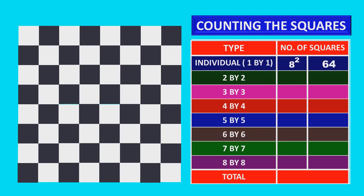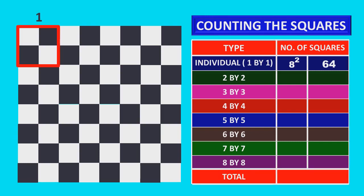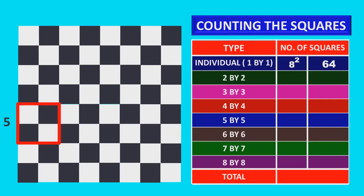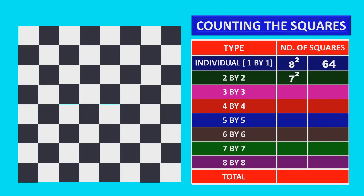Now, consider 2 by 2 squares. There are 7 columns and 7 rows. So, 7 into 7 is equal to 7 squared, which is 49 squares.